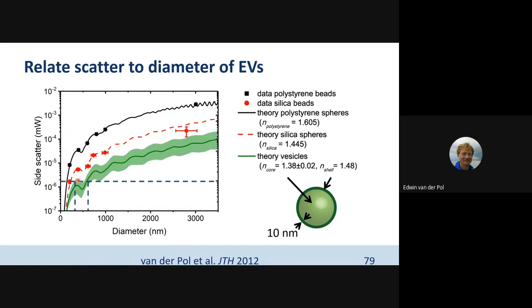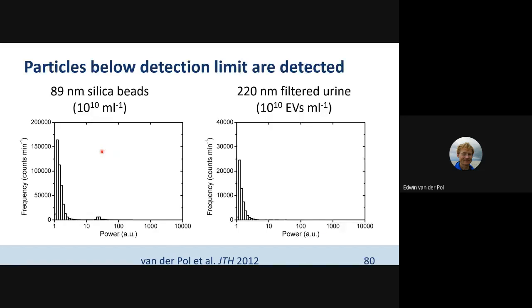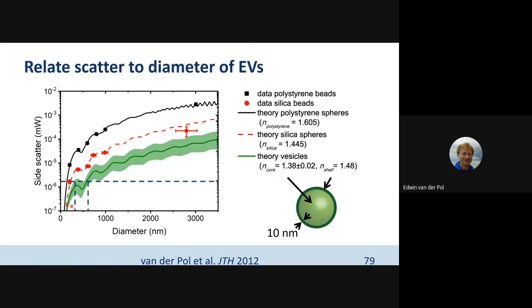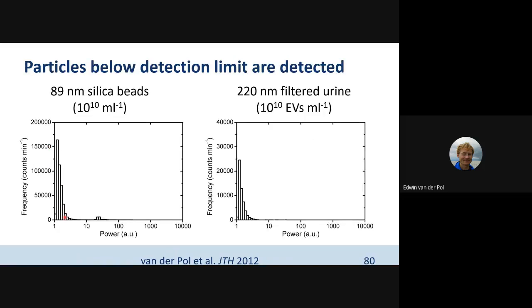Vesicles scatter light much less efficiently than polystyrene beads previously used to calibrate flow cytometers. We calibrated our flow cytometer with beads and Mie theory, then compared the previous gate of 500 and 900 nm polystyrene beads to vesicle diameters. If you apply that bead gate and call every particle within it a vesicle, that has nothing to do with measuring vesicles — you include particles of two micrometers and larger, which are cells. So a lot of research done that way was studying cells, not vesicles.